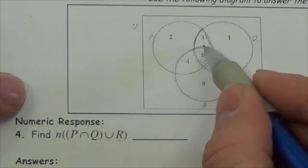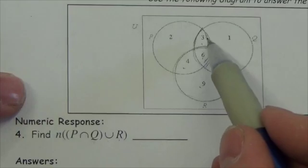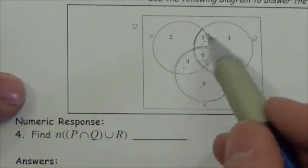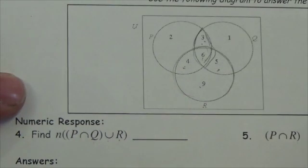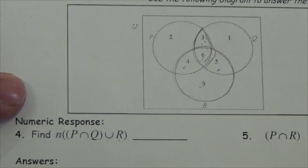So we're adding these numbers together. This is going to end up being 3 plus 4 plus 6. Okay, all together that's going to be 13, plus 5 is going to be 18, plus 9 is going to be 27. So there are 27 objects in P intersection Q union R.